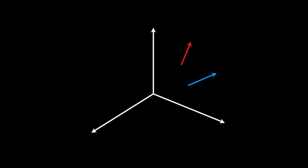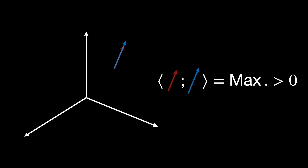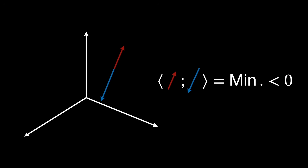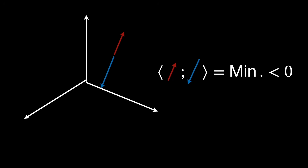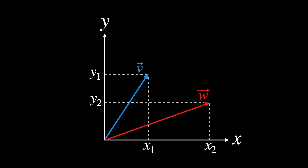Think of the inner product as a directional ruler. It doesn't just tell you how long something is — it also tells you how aligned two things are. Imagine two vectors in space: if they point in the same direction, it produces a large positive inner product. If they are at a 90-degree angle, the inner product is zero. If they point in opposite directions, the inner product is very negative. For a specific example, take two vectors v with coordinates (x₁, y₁) and w with coordinates (x₂, y₂).